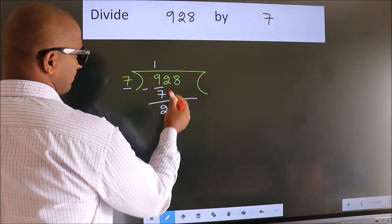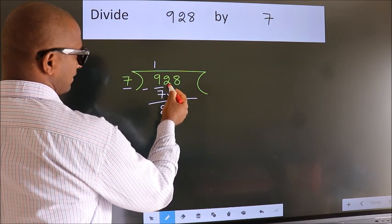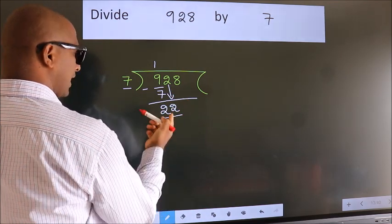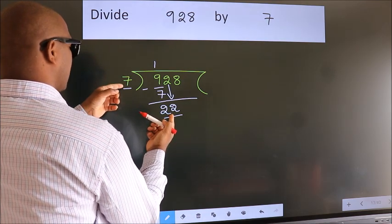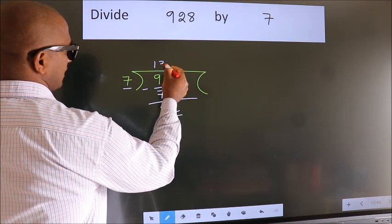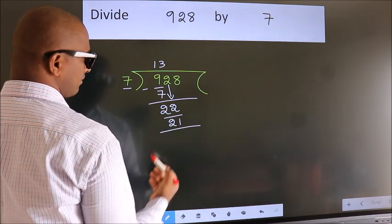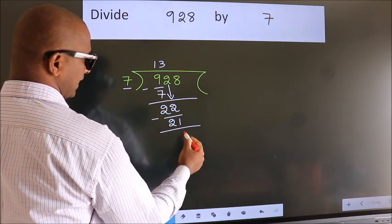After this, bring down the beside number. So 2 down. So 22. A number close to 22 in 7 table is 7 threes 21. Now we subtract. We get 1.